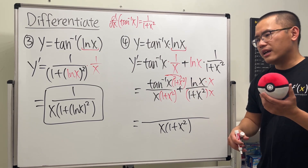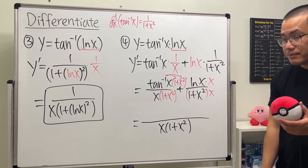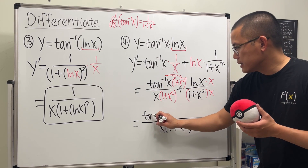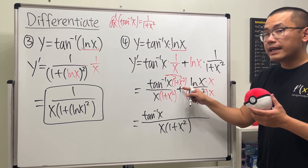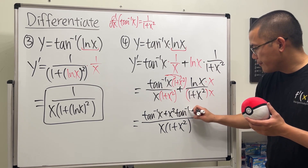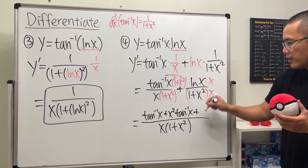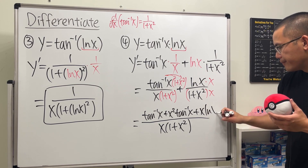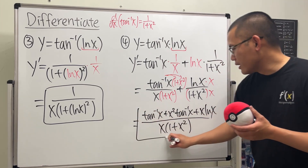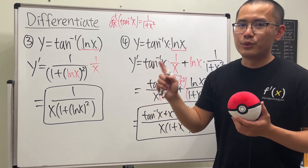The denominator is x·(1 + x²), kept in factored form. Distributing the numerator: arctan(x)·(1 + x²) becomes arctan(x) + x²·arctan(x), then we add x·ln(x). Nothing combines, so the final answer is [arctan(x) + x²·arctan(x) + x·ln(x)] over x·(1 + x²). Check out my playlist for more derivative questions.